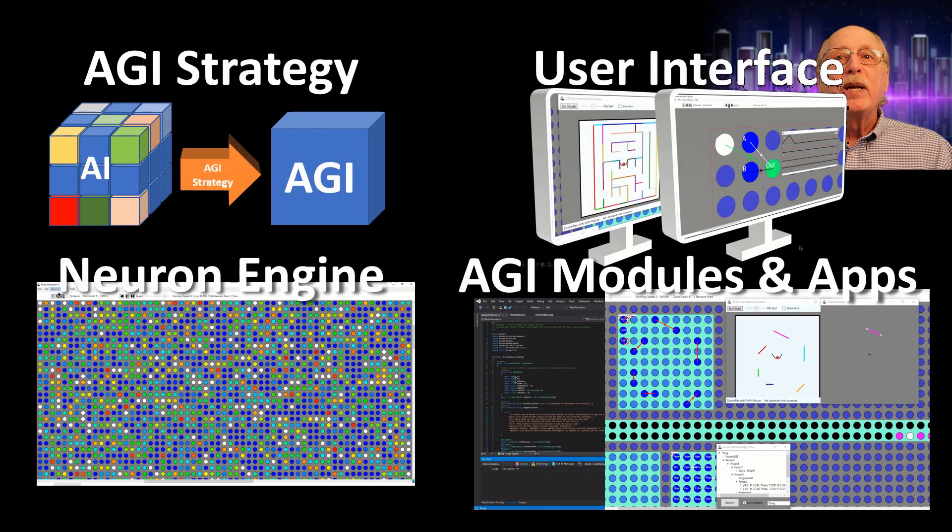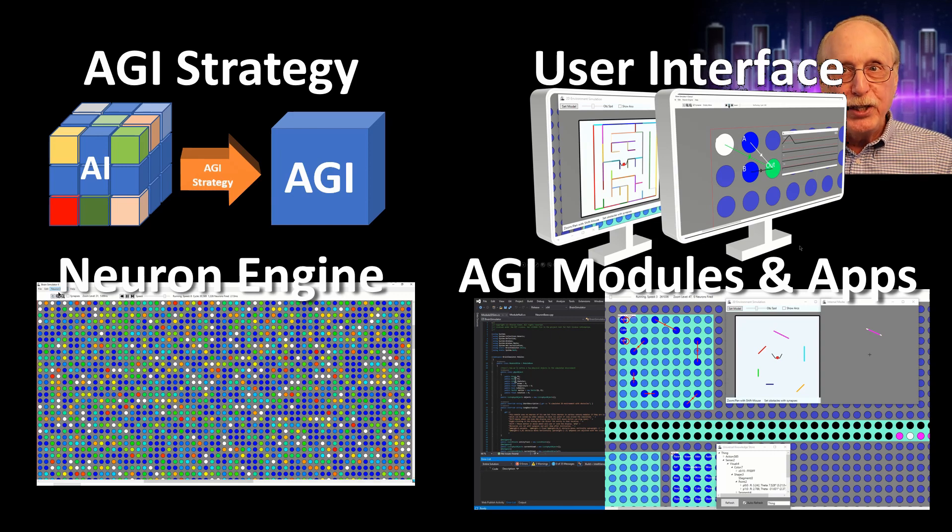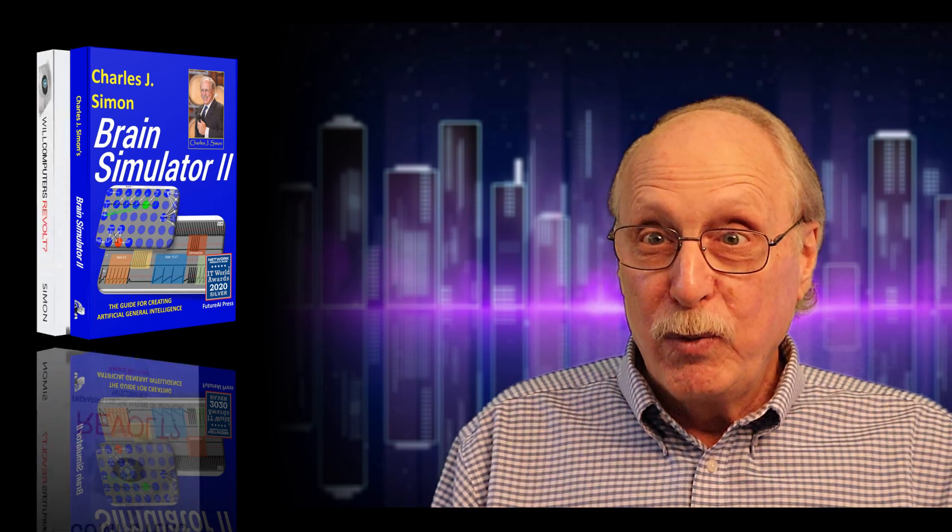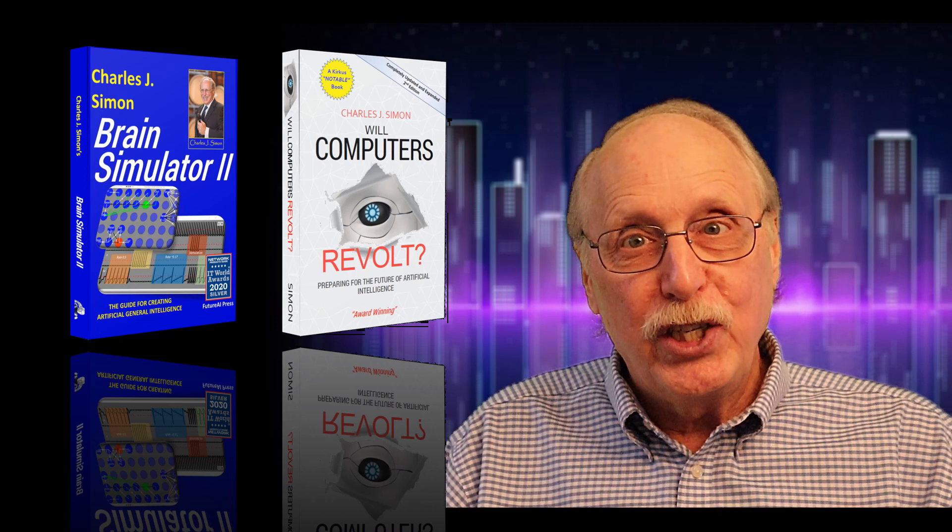In summary, the Brain Simulator 2 is completely free, an open-source AGI research project supporting an experimental AGI strategy, with a snappy user interface, a powerful neuron engine, and numerous modules and apps. For even more information, my books will be useful. The Brain Simulator 2 book explains how the program works and how to use it, while Will Computers Revolt delves into the why, when, and how dangerous of AGI.